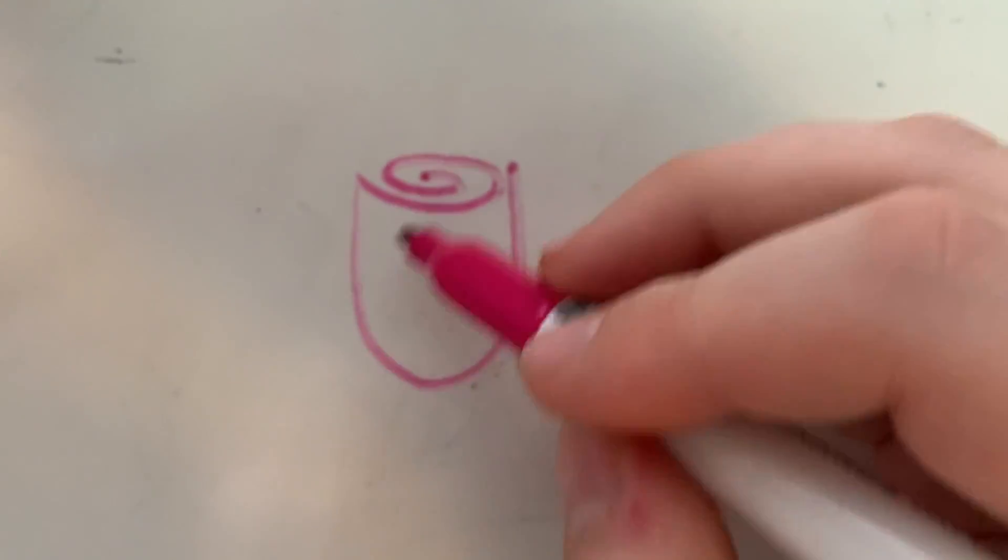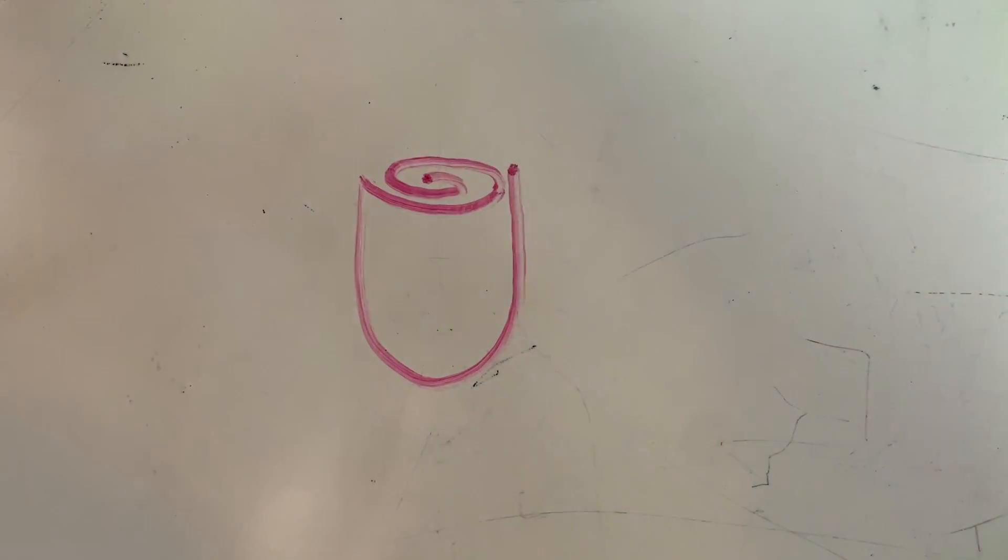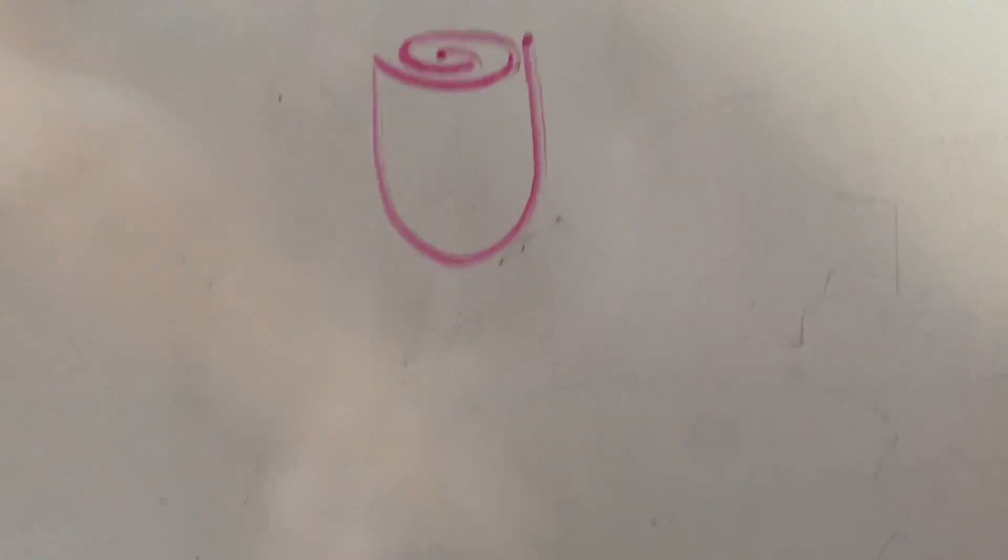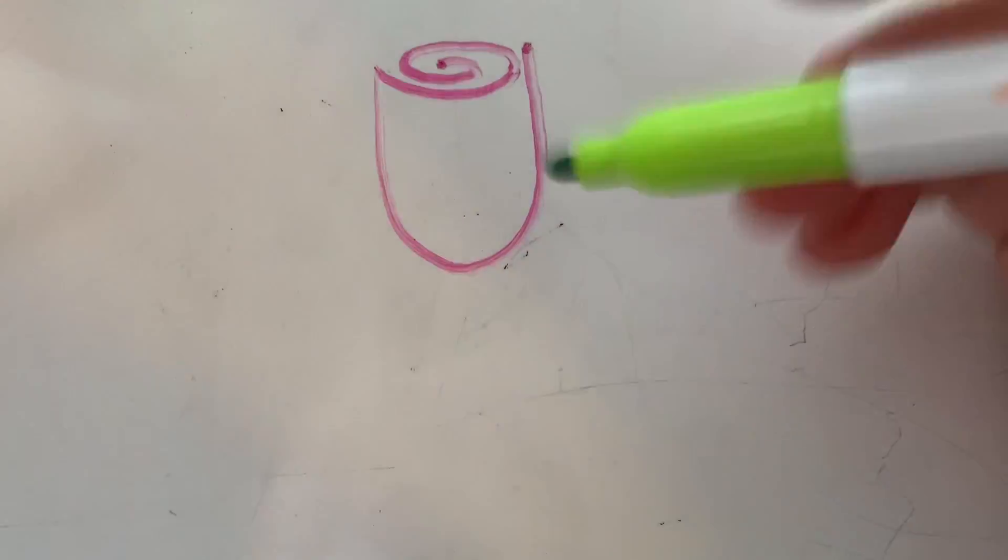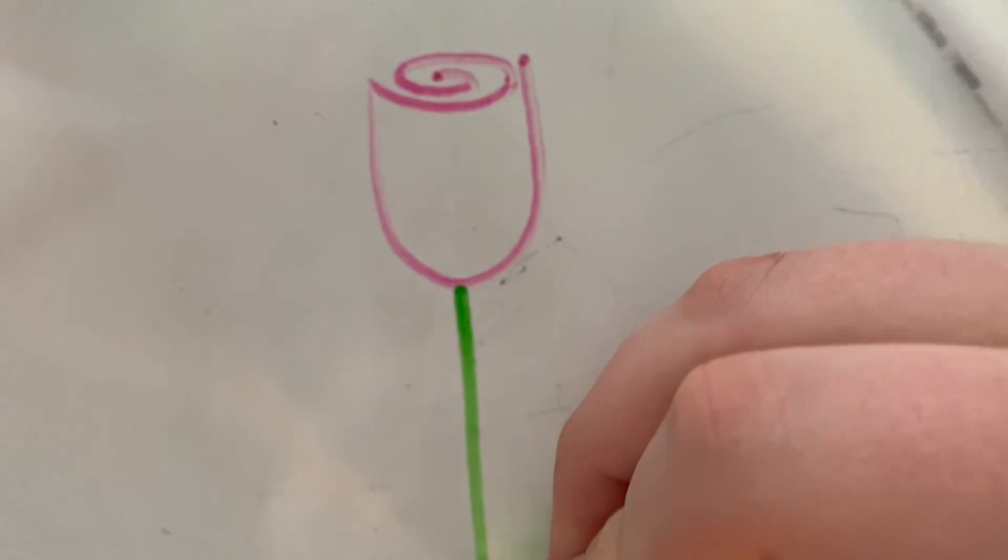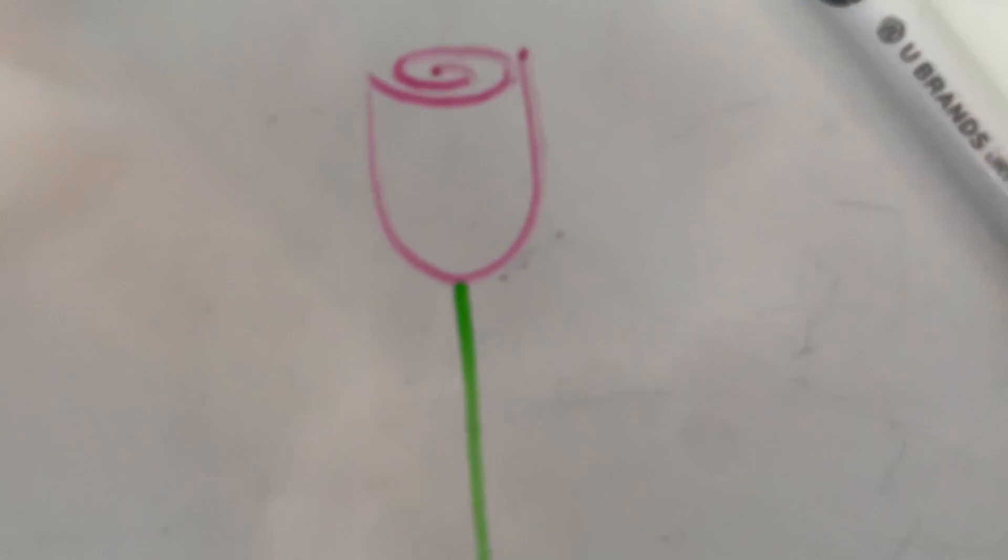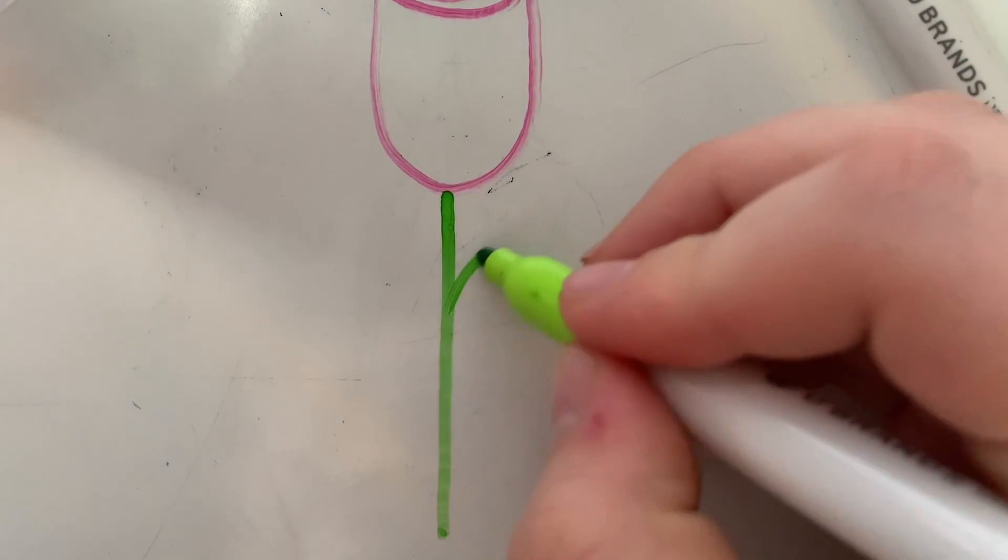Then you can shade this in if you want or you can move on to the stem. The stem is just a straight line and then if you want to add some leaves you can, just like that.